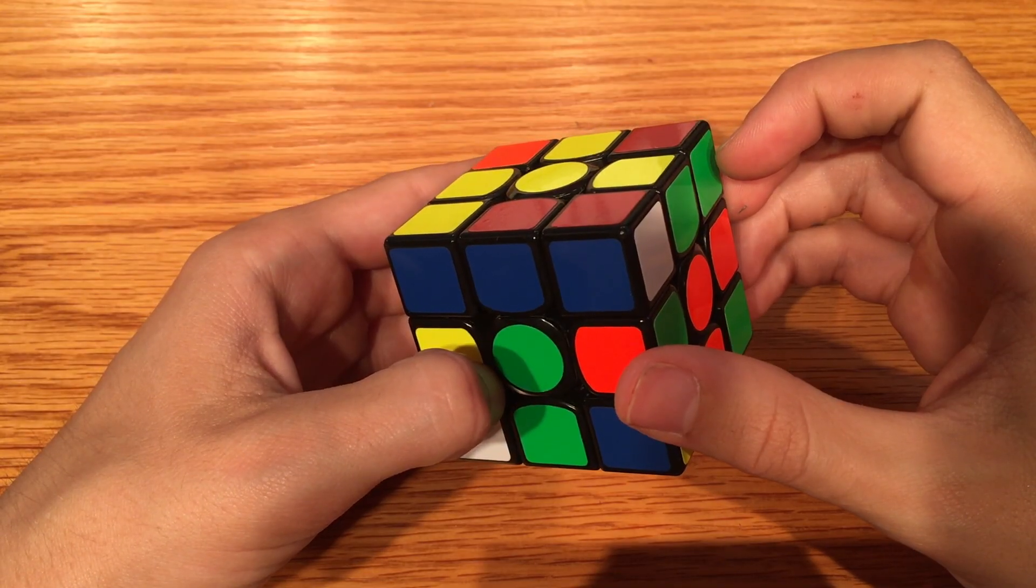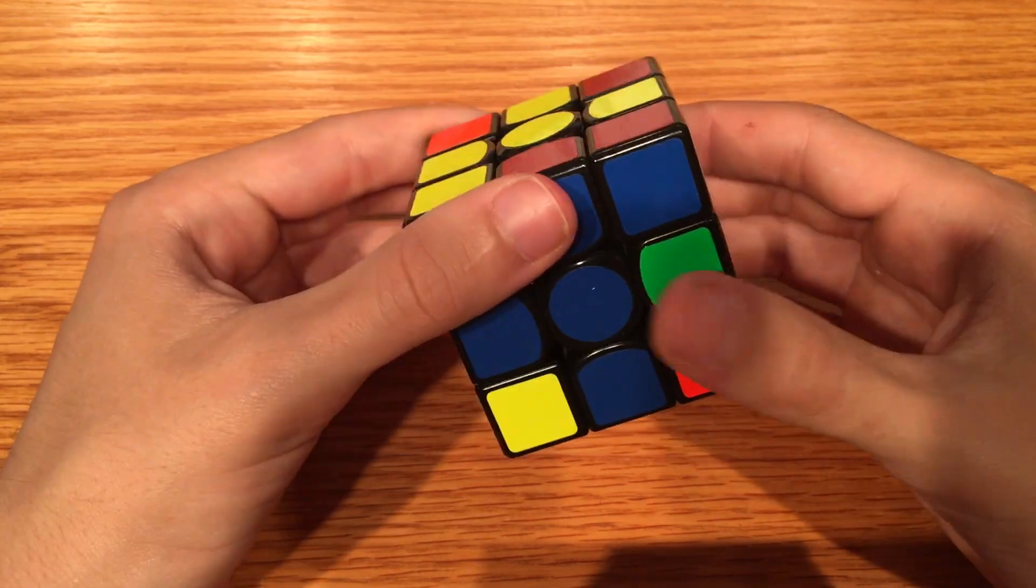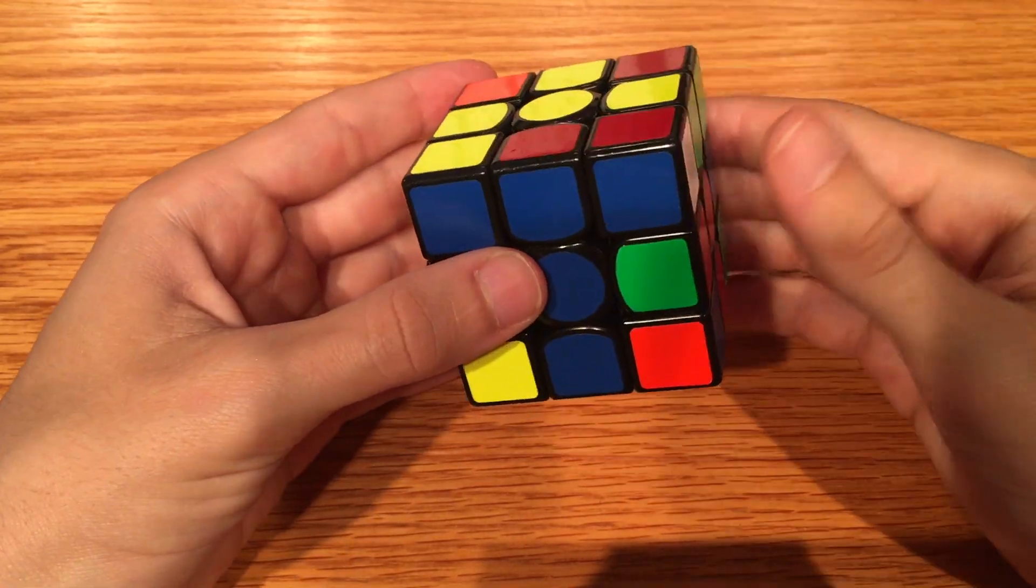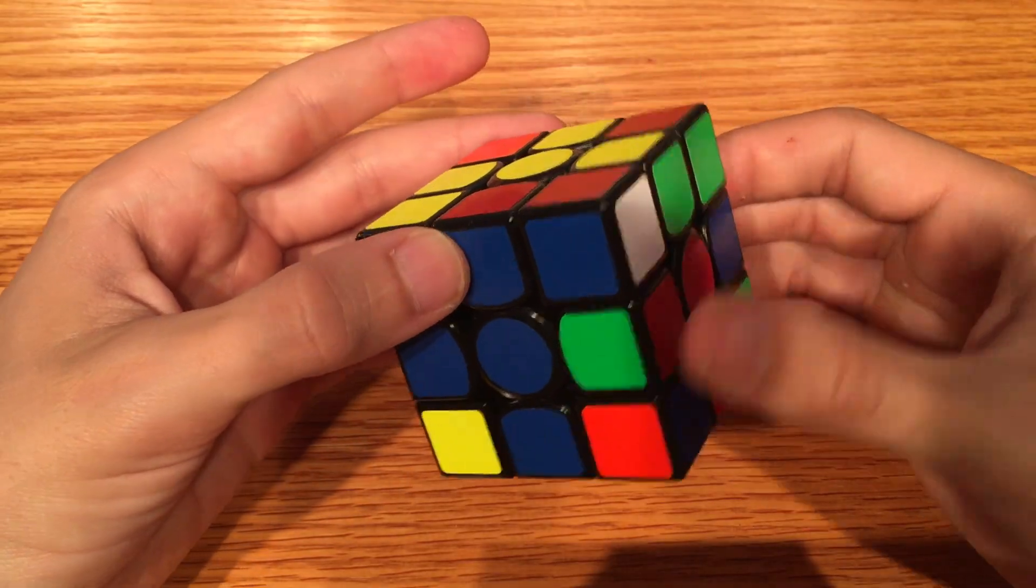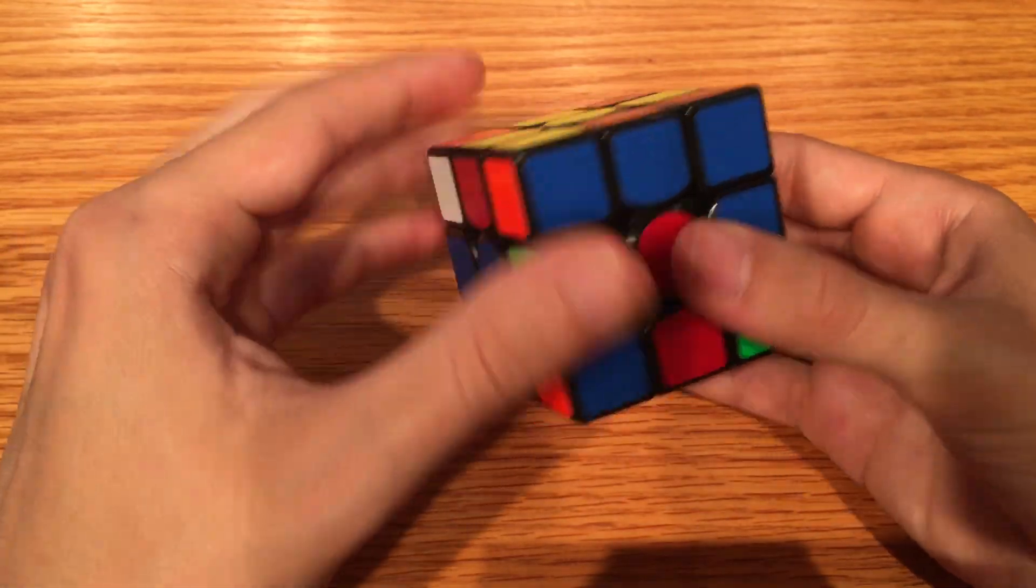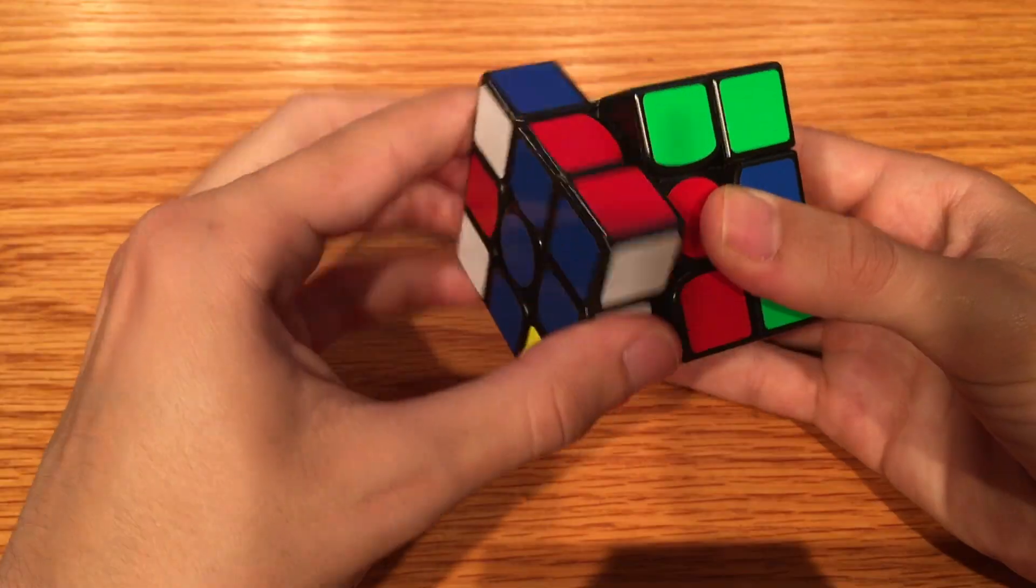Now, just like in the lateral algorithm, we line up and insert. So that means across, open, in, close.